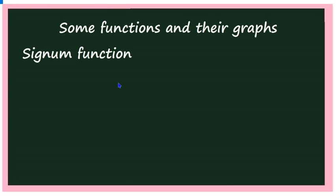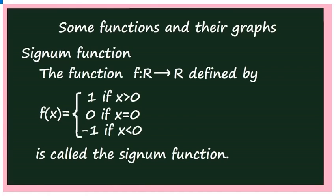Hello students. In this video I will explain two important functions. The first one is the signum function. The function f from R to R is defined by: f(x) = 1 if x is greater than 0, f(x) = 0 if x equals 0, and f(x) = −1 if x is less than 0. This is called the signum function.